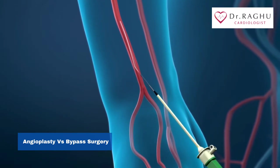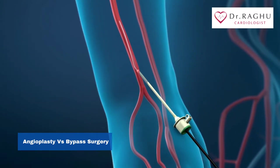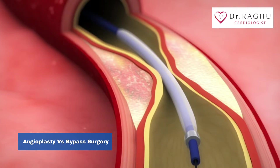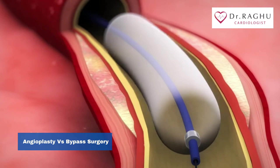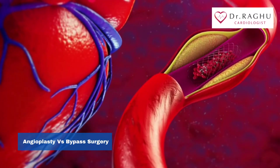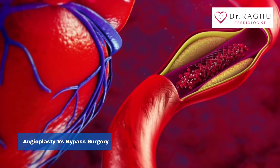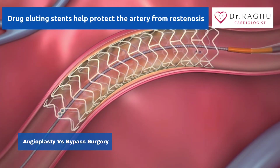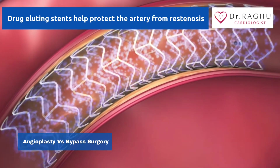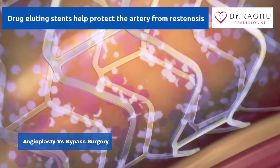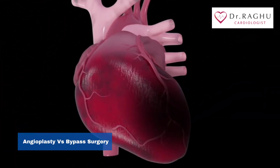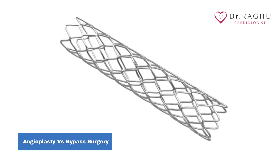A small balloon wrapped in a collapsed wire mesh stent is inserted into a blood vessel in the groin or arm and maneuvered into the heart. When the balloon is inflated, it flattens the cholesterol-filled plaque that has been restricting blood flow through the artery. When the balloon is deflated and removed, the stent remains behind to prop open the artery — this is called balloon angioplasty with stenting. A drug-eluting stent is coated with a slow-release medication to help prevent blood clots from forming in the stent, as clotting can cause a future blockage and may lead to a heart attack. Stents without a drug coating are called bare metal stents.